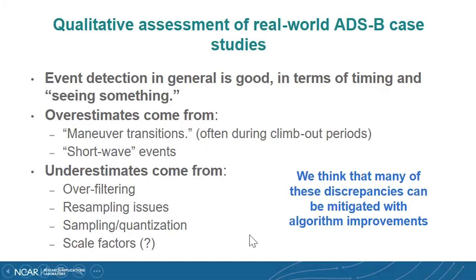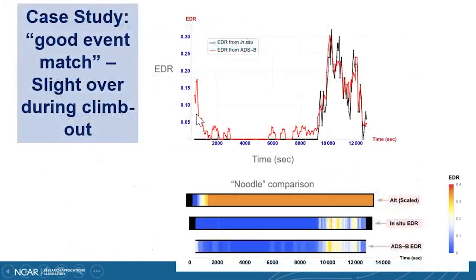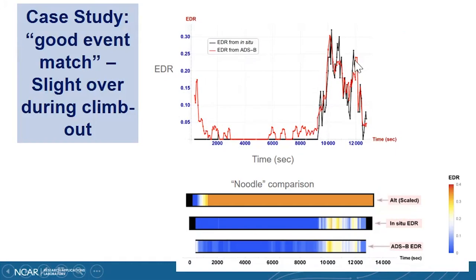This is a work in progress, and we think many of these discrepancies can be mitigated with algorithm improvements. In the top-right time series plot, the black line is in-situ EDR as truth and the red line is EDR from the ADS-B prototype algorithm. During climb-out there's a little overestimate, but for the main turbulence event the ADS-B algorithm is matching really quite well with the in-situ EDR.